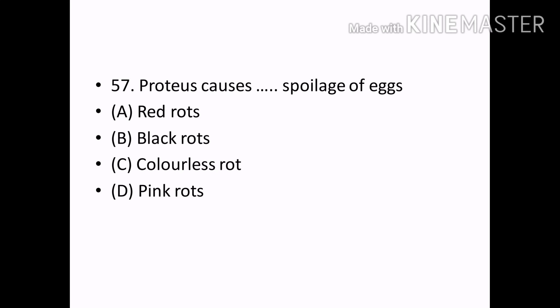Proteus causes dirt spoilage of eggs — which type of rot? Options — Red rot, Black rot, Colorless rot, Pink rot. Correct answer: Option B — Black rot.